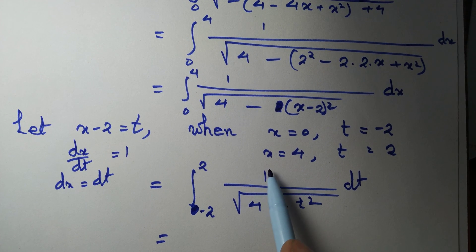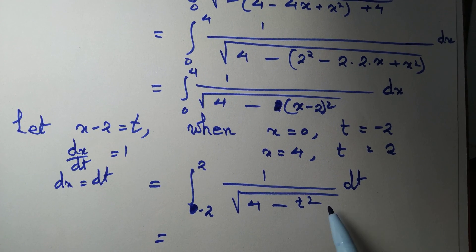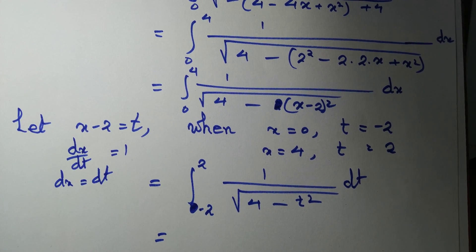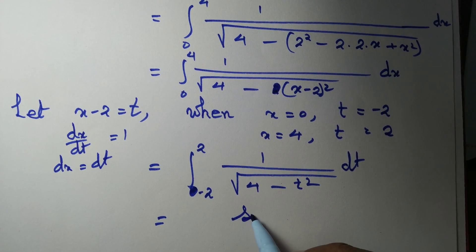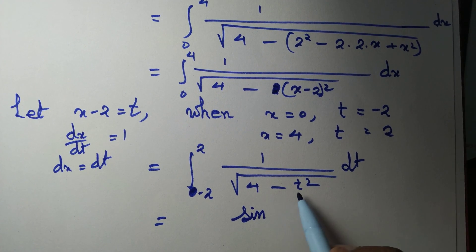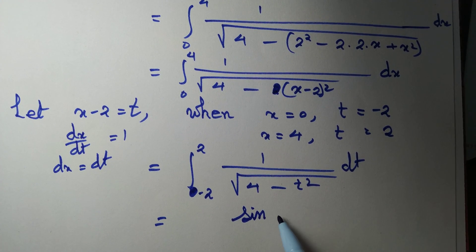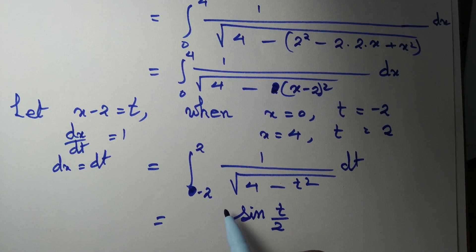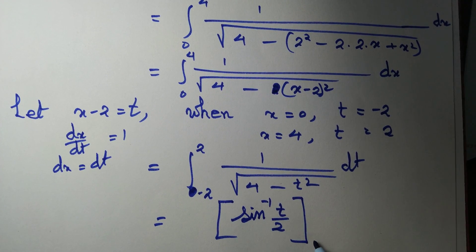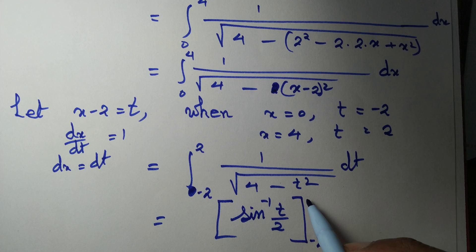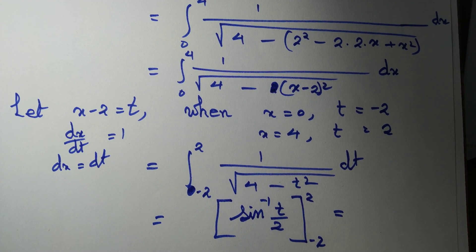This is of the standard form 1 over root(a squared minus x squared) dx, whose integral equals sin inverse of x over a. Here a equals 2, so the result is sin inverse of t over 2, evaluated from minus 2 to 2.